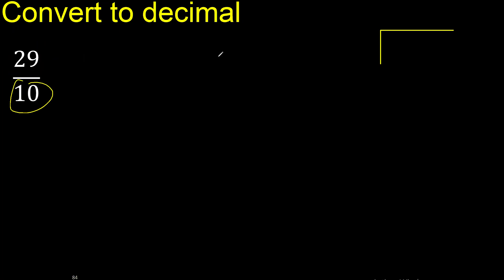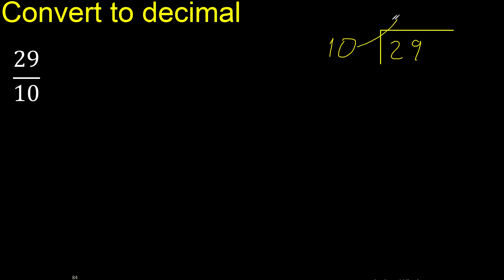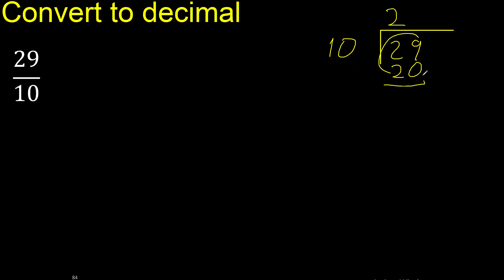29 divided by 10. 29 is not less than 10, therefore 10 multiplied by which number is nearest to 29 but not greater. Multiplied by 3 is 30 — 30 is greater. Therefore multiplied by 2 is 20, subtract is 9. There is no number that goes down, therefore complete.